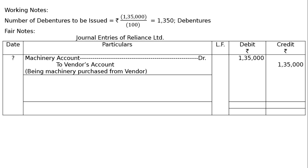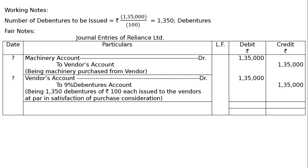The next entry will be issuing debentures to the vendor. Vendor's Account debited Rs. 1,35,000 to 9% Debentures Account Rs. 1,35,000, being 1350 debentures of Rs. 100 each issued to the vendor at par in satisfaction of purchase consideration.